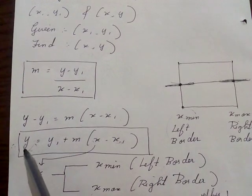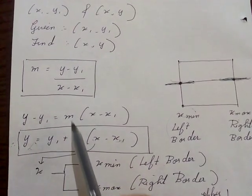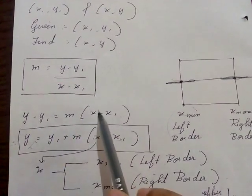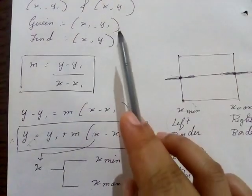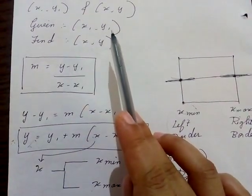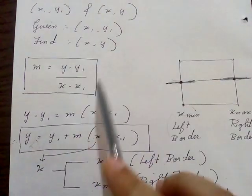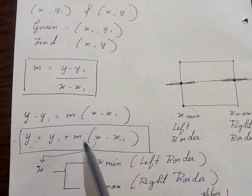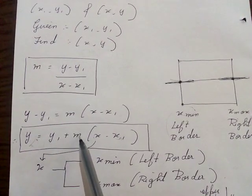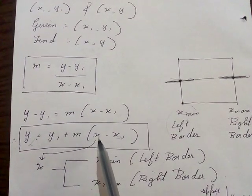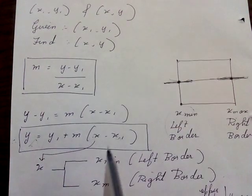So y = y1 + m(x - x1). Here x1 and y1 are already given, and slope m can be found using the formula. But the question is: what value to put for x, because x will not be given directly.